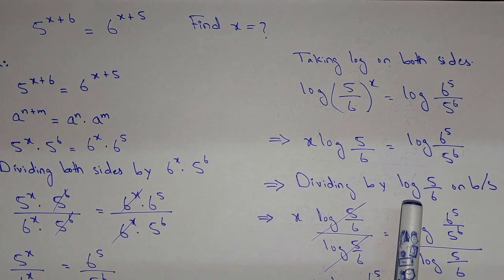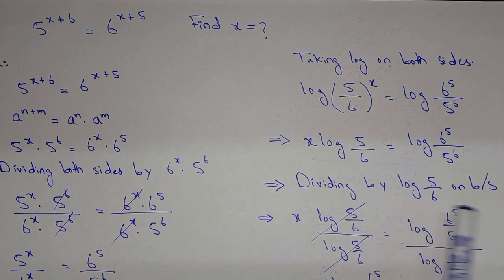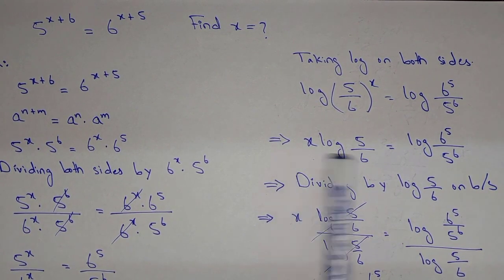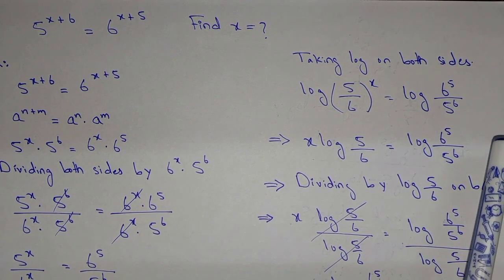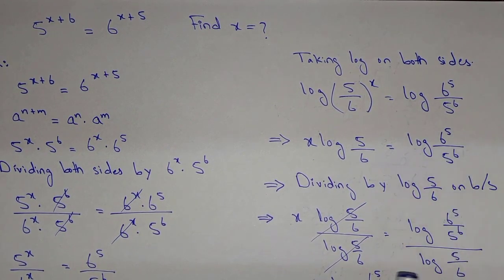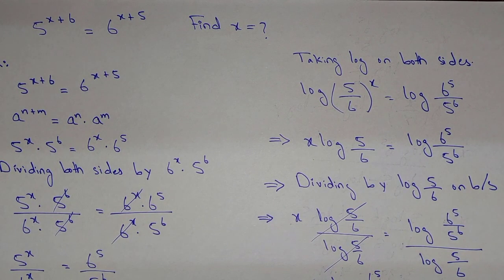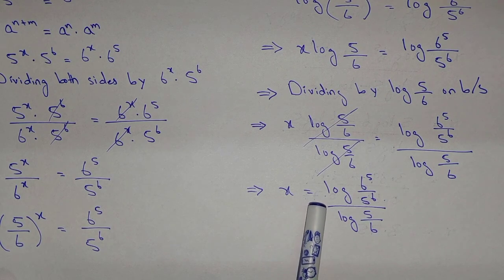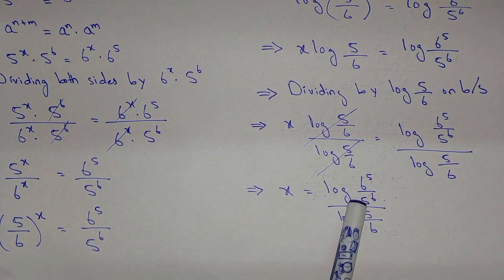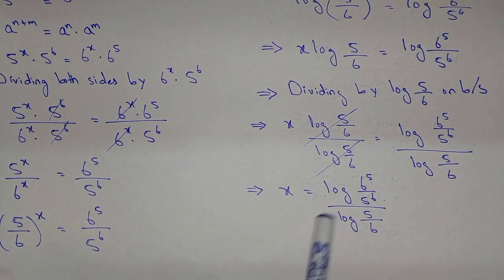Dividing both sides by log(5/6), those terms cancel, and we get x = log(6^5 / 5^6) / log(5/6).